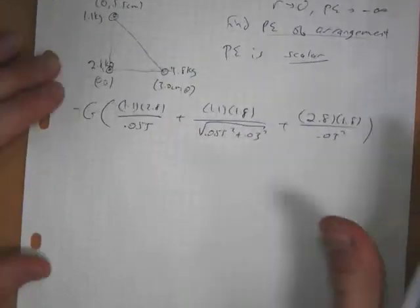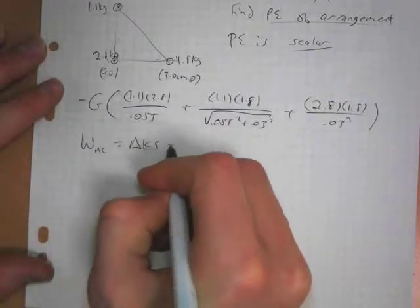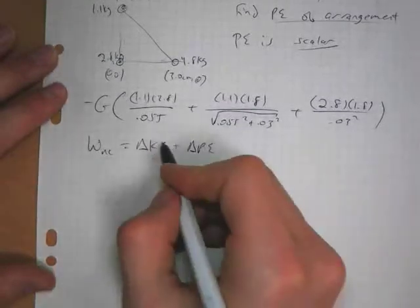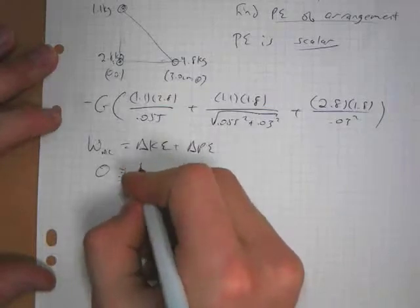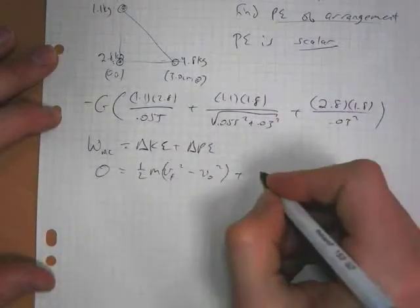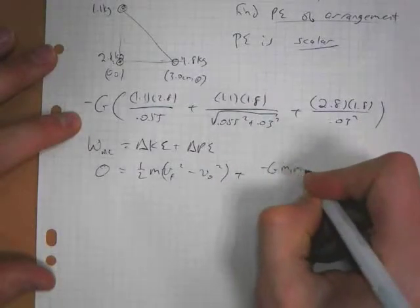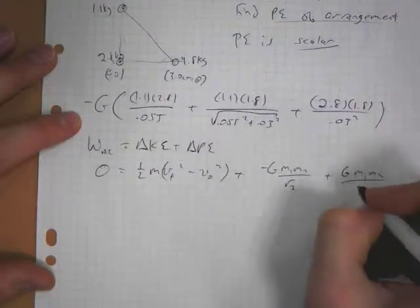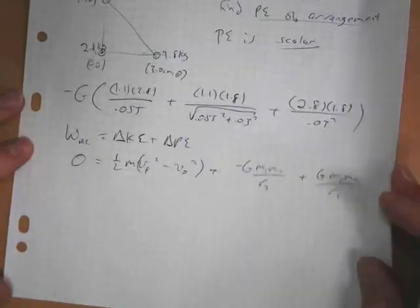Now, remember, if only gravity is acting, we know the work done by non-conservative forces is delta KE plus delta PE. And if non-conservative is zero, then that means that our delta KE, one-half M V final squared, minus V naught squared, plus delta PE, which is what? Minus G M1 M2 over R2, plus G M1 M2 over R1 is equal to zero. And so we can use that conservation of energy to solve problems.